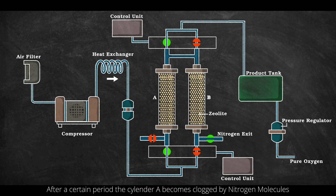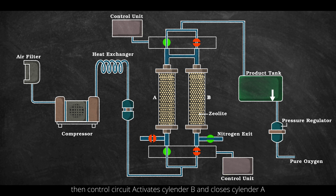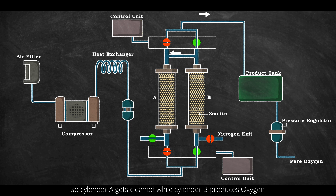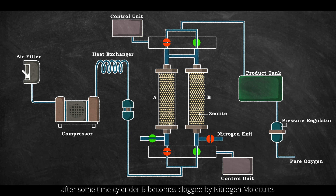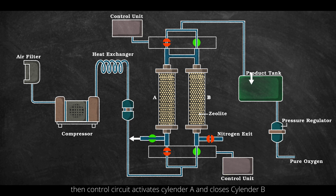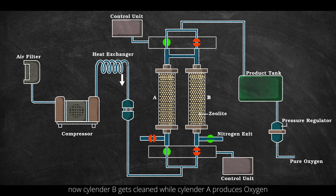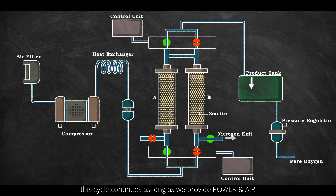After a certain period, Cylinder A becomes clogged by nitrogen molecules. Then the control circuit activates Cylinder B and closes Cylinder A, so Cylinder A gets cleaned while Cylinder B produces oxygen. After some time, Cylinder B becomes clogged by nitrogen molecules, and the control circuit activates Cylinder A and closes Cylinder B. Now Cylinder B gets cleaned while Cylinder A produces oxygen. This cycle continues as long as power and air are provided.